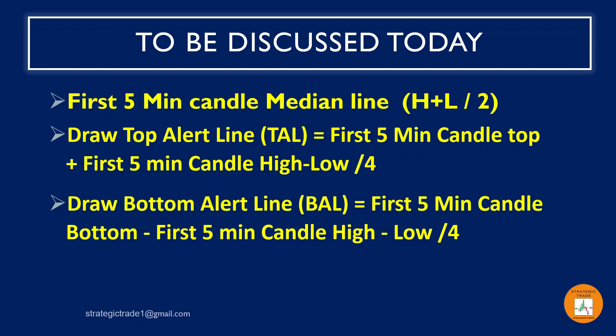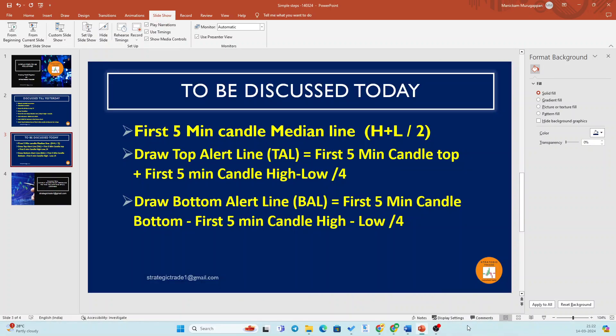TAL means first five-minute candle high minus low divided by four. For example, if a candle height is twenty, then twenty divided by four is five. So we will have to add five from the top line. Same way, draw the bottom alert line, which is first five-minute candle bottom minus (first five-minute candle high minus low divided by four). If the candle size is twenty and divided by four is five, then you subtract five. So these three lines — candle top, candle bottom, and median — are already drawn, and today we are adding the alert lines.